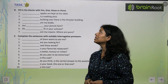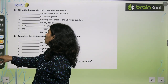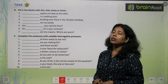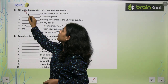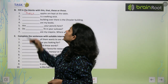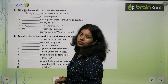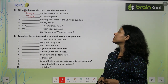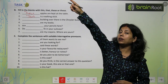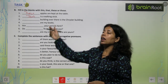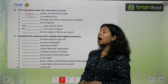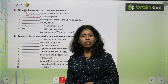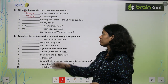Fill in the blanks with this, that, these, or those — demonstrative pronouns. First: Dash apples are kept at the table — answer: These apples are kept at the table. Next: Dash is a walking stick — answer: This is a walking stick. Dash building over there is the crystal building — answer: That building. These are my books. Are these your pencils? The remaining part you will complete as homework.